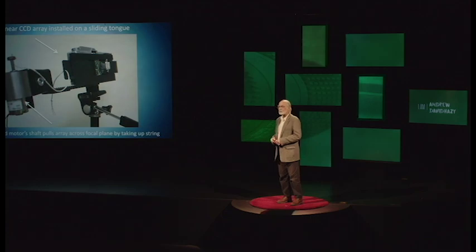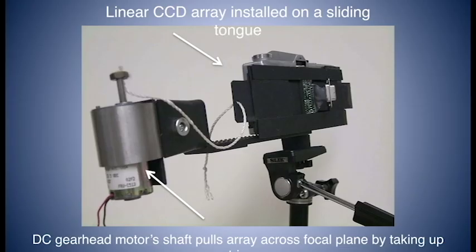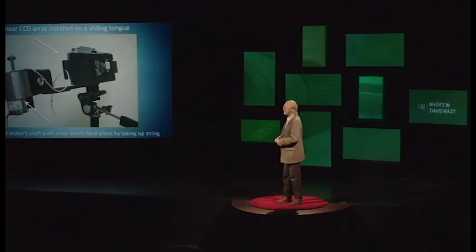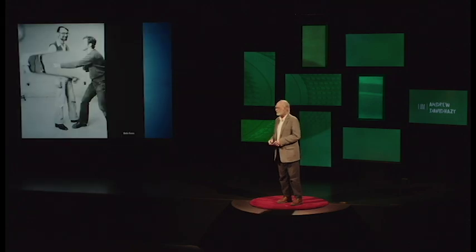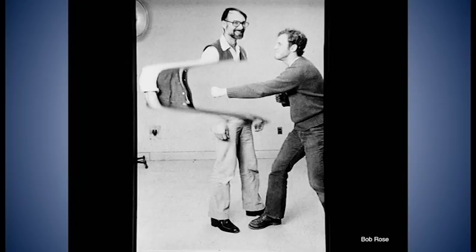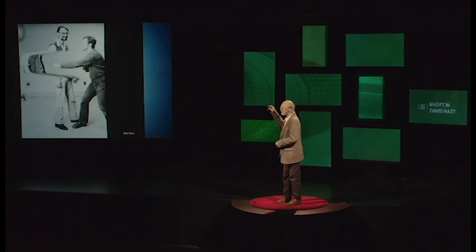Now you can do some interesting things by making that linear array traverse the focal plane of the camera. You'd have a focal plane scanning system and unusual representations of reality can be easily made with such a camera. No Photoshop involved. No manipulations. This is the way it comes out. The picture is scanned from top to bottom and halfway through, the person moves and then moves again.